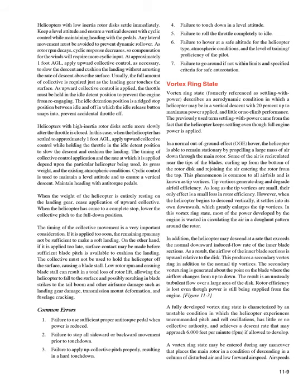In the vortex ring state, most of the power developed by the engine is wasted in circulating air in a donut pattern around the rotor. The helicopter may descend at a rate that exceeds the normal downward-induced flow rate of the inner blade sections, producing a secondary vortex ring in addition to normal tip vortices. The secondary vortex ring generates about the point on the blade where airflow changes from up to down, resulting in unsteady turbulent flow over a large area of the disc. A fully developed vortex ring state is characterized by uncommanded pitch and roll oscillations, little or no collective authority, and a descent rate that may approach 6,000 fpm if allowed to develop.